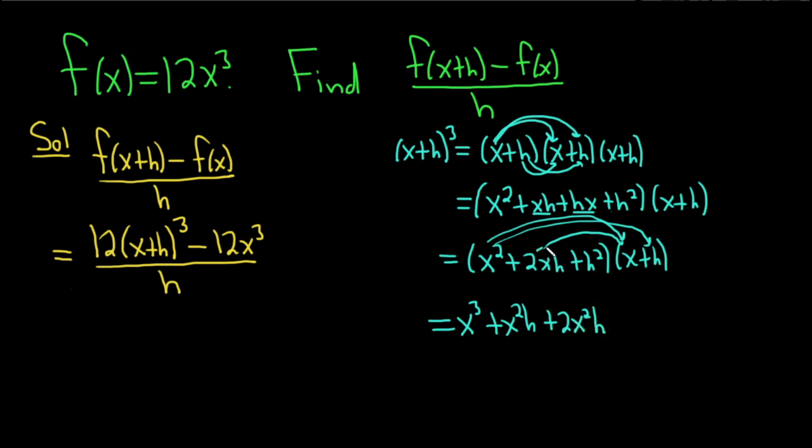And then 2xh times h. You multiply the h's that time. You combine them, rather. So this is 2xh squared. And then we do the last one, h squared times x, which is just h squared times x. And then h squared times h is h cubed. Beautiful. So this is x plus h squared.